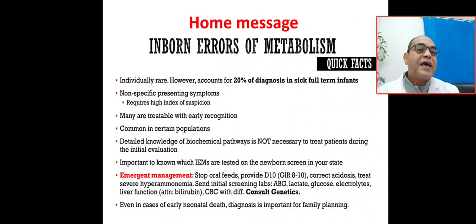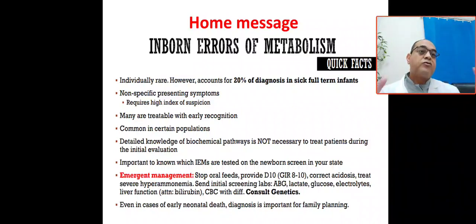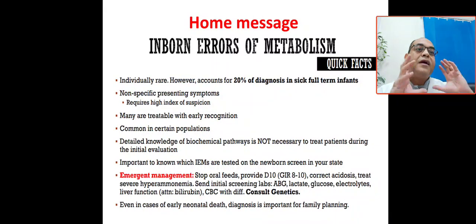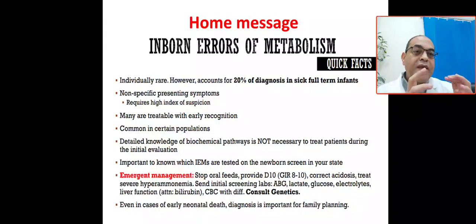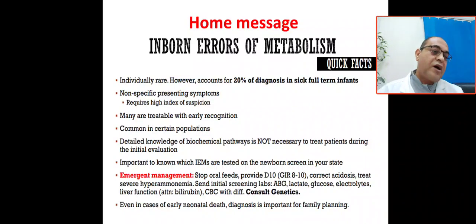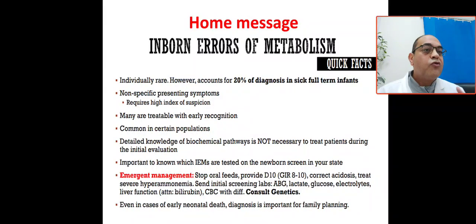Fifth: detailed knowledge of the biochemical pathway is not necessary to treat patients during initial evaluation. Treat the emergency first — ABC, eliminate the triggering factor, provide glucose for anabolic support — then pursue the biochemical pathway. Sixth: it is important to know which inborn errors of metabolism are tested on the newborn screening in your hospital or state. For example, our hospital screens for 17 diseases including congenital adrenal hyperplasia, amino acidopathies, and galactosemia.